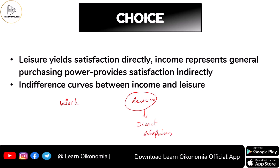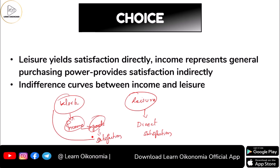Work is something that will give you income, and with this income you can buy some goods, and only by consuming these goods will you be getting satisfaction. So work would provide you satisfaction, but that would be indirect. Work gives you income which affects your purchasing power, which provides you satisfaction indirectly. When we come to the indifference curve application, we consider both income and leisure, because it is only with work that comes income.